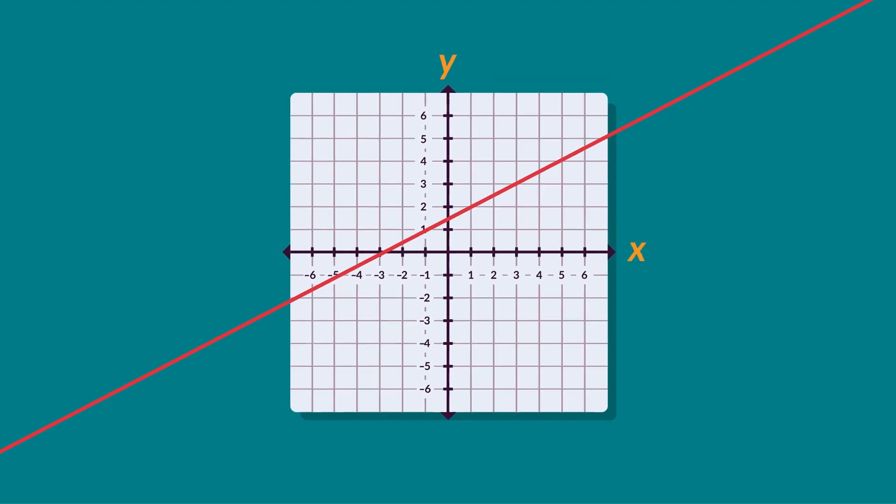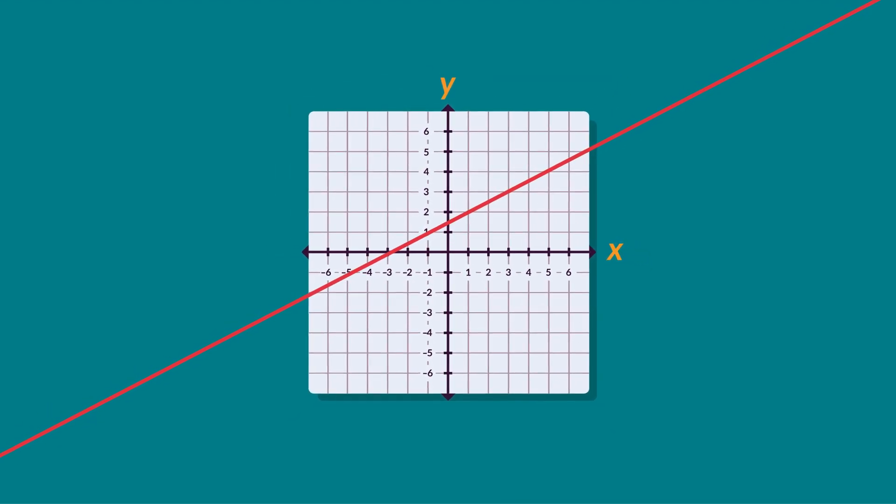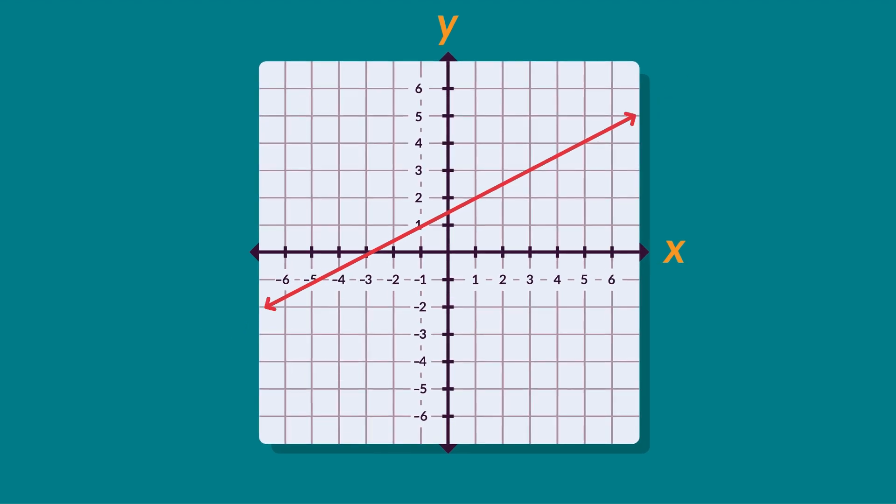So a line on a coordinate plane represents much more than the points that are plotted. We can use the properties of lines to calculate gradient.